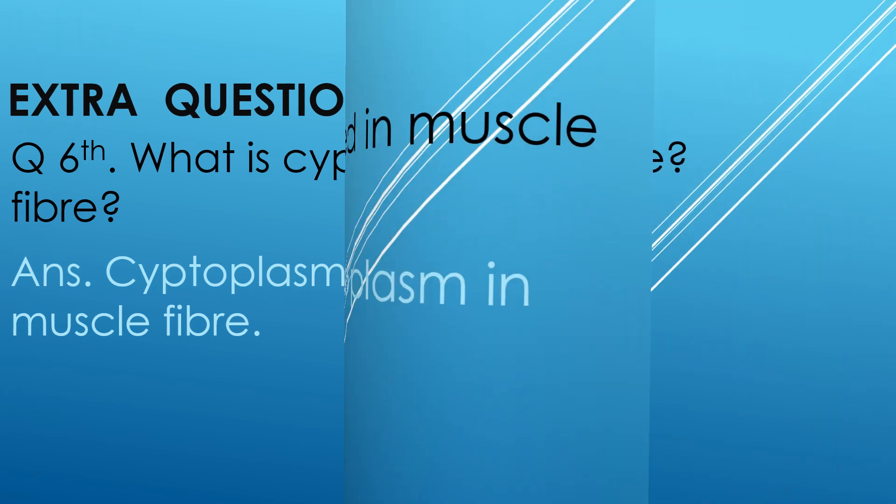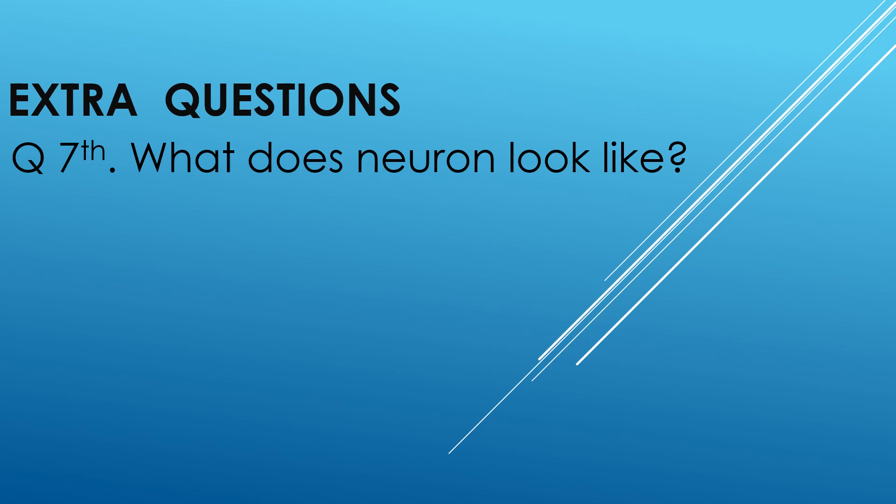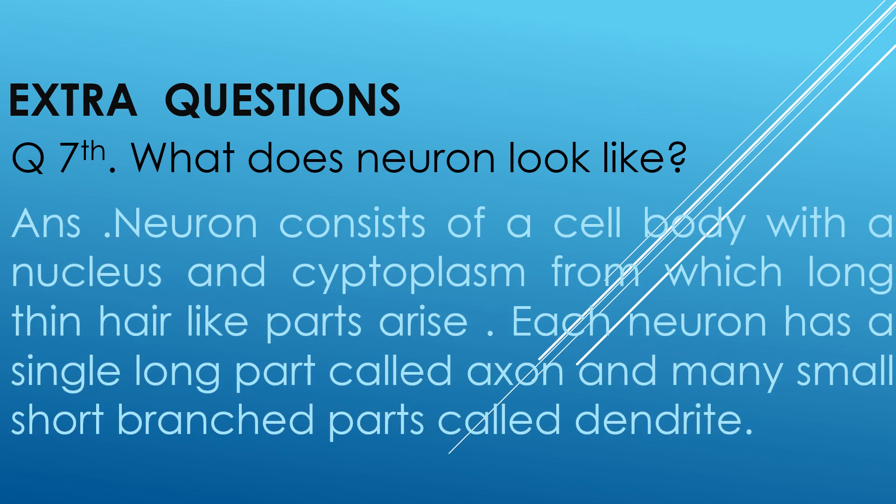Let's discuss question 7. What does a neuron look like? The answer is: a neuron consists of a cell body with a nucleus and cytoplasm from which long thin hair-like parts arise. Each neuron has a single long branch called axon and many small short branch parts called dendrites.